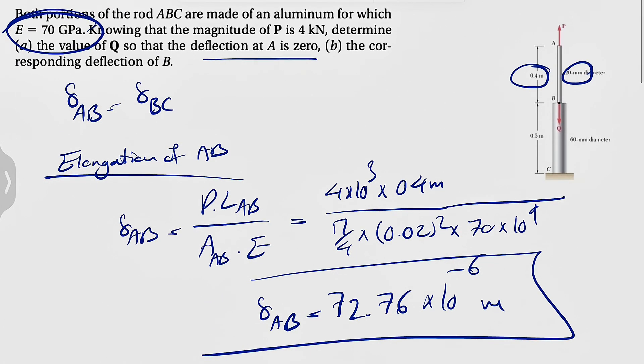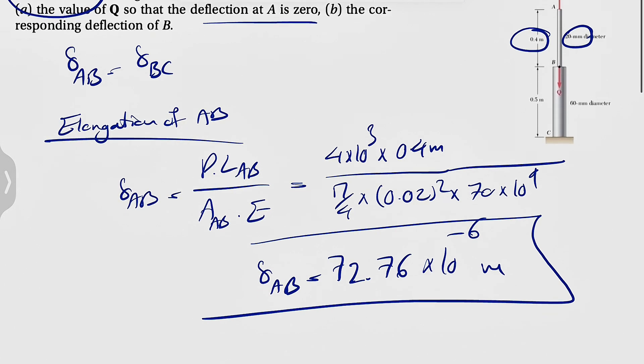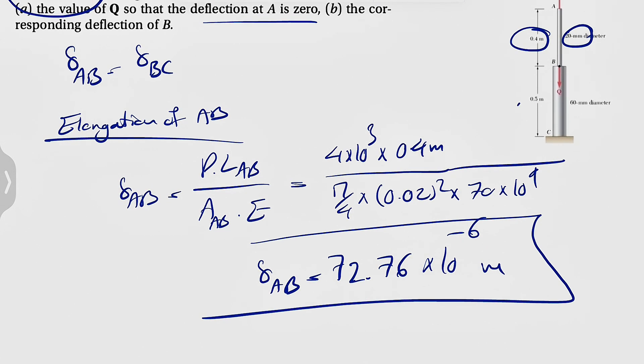We also have to figure out the force that we're going to have on member BC. For finding that force, just to avoid any confusion, we're going to do a section in here. This is going to be our section. We have the force P, and this will be our Q. Let's figure out the force that we have for member BC. I'm just going to show it with FBC.